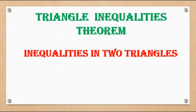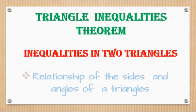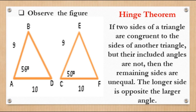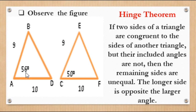Now let's proceed to triangle inequalities focusing on inequalities in two triangles, which refers to the relationship of the sides and angles. The Hinge Theorem states: if two sides of a triangle are congruent to the sides of another triangle but their included angles are not, then the remaining sides are unequal — the longer side is opposite the larger angle. In the figure, the included angle of the first triangle is 56 degrees and of the second is 50 degrees, so sides BD and EF are unequal.